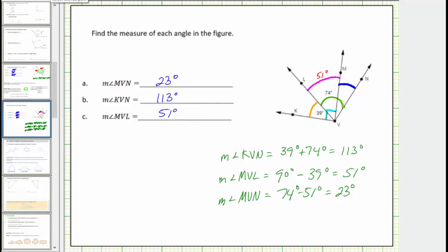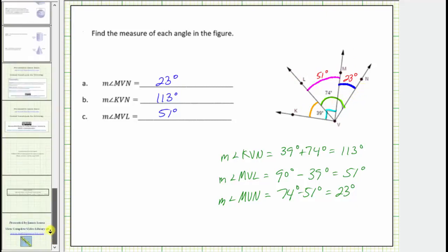Let's label this and check our work. If this angle is 23 degrees, notice how 23 degrees plus 51 degrees equals 74 degrees, which is the measure of angle LVN. Therefore our work is correct. I hope you found this helpful.